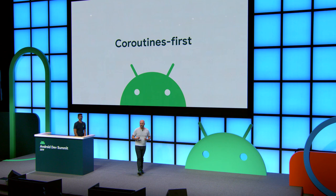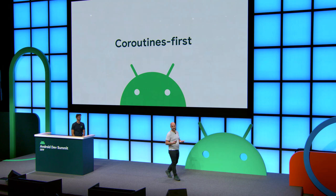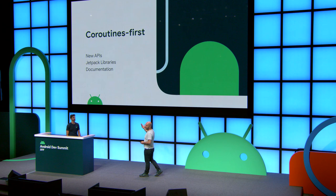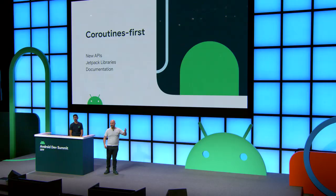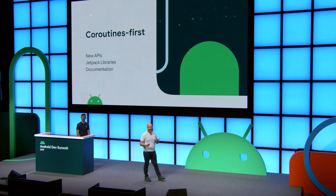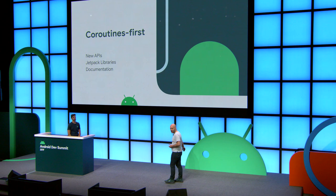At I/O, we talked about how we are going to make Android UI coroutines-first. What practically does that change about what we are doing while building the Android UI toolkit? As we build new APIs for Android, we are going to look at whether coroutines fit and provide good coroutines support. As we build Jetpack libraries, we are going to use coroutines to build those libraries. You are going to start seeing coroutines shipped in Kotlin-first Jetpack libraries. Additionally, we are going to write documentation on developer.android.com to explain how to use coroutines with architecture components and other parts of Android.